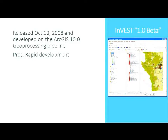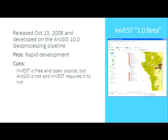There were pros to building on ArcGIS: you could go to a conference, hand out the CD, and say here's all this great natural capital science — and you can use it in the environment you're already using. It was quick to develop, just a little toolbox. But of course, since this is an open source GIS conference, there are plenty of cons.